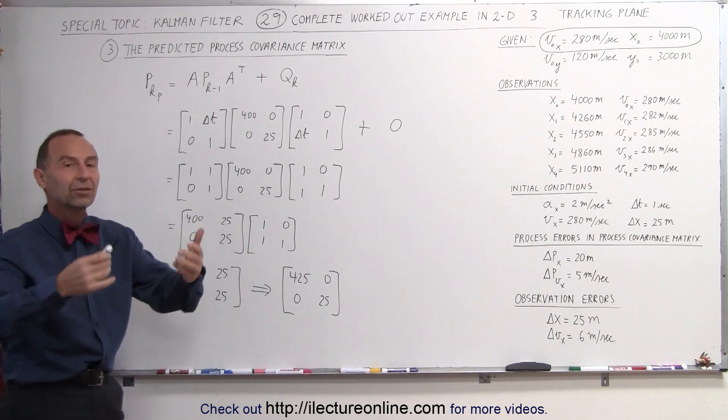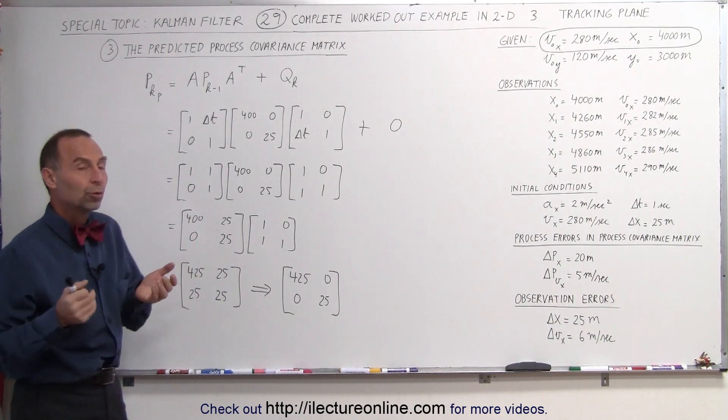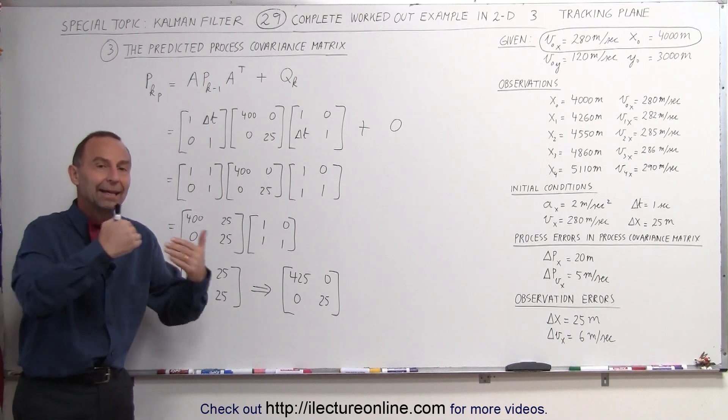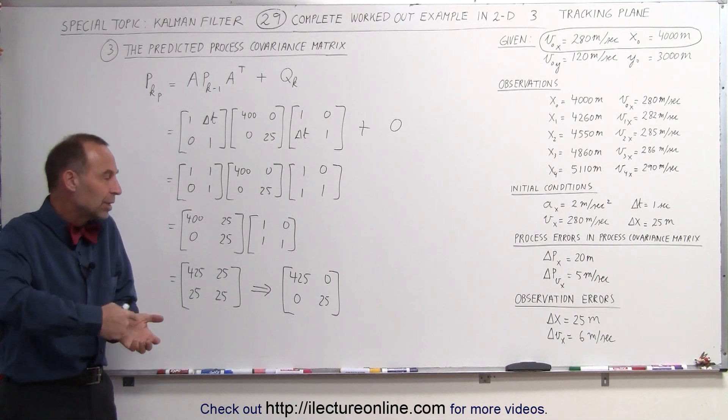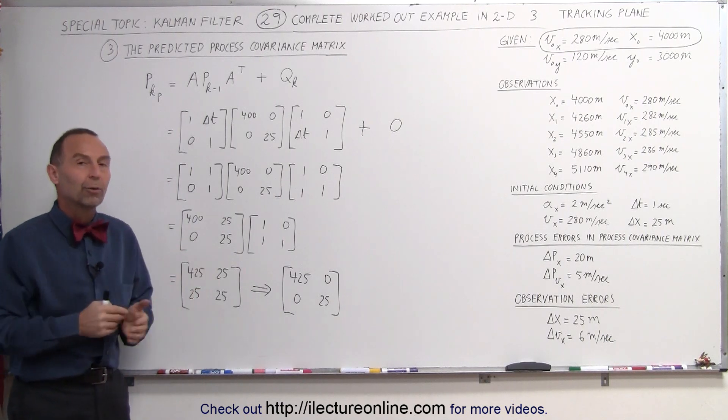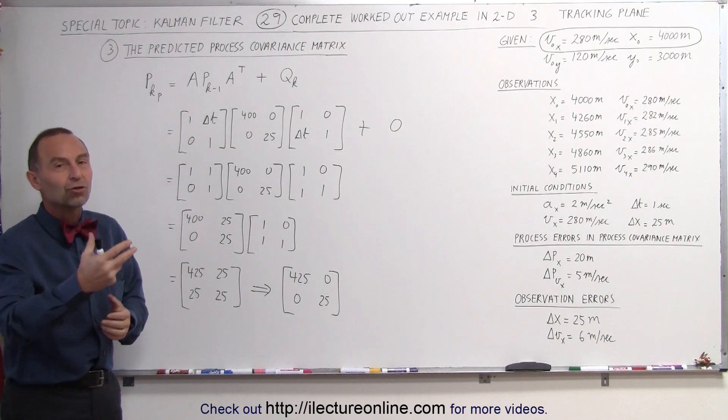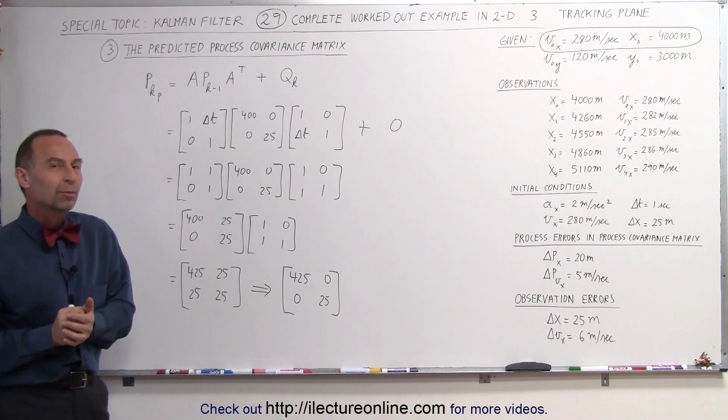This is the adjusted or the predicted, what we call process covariance matrix, which we'll then use in the Kalman gain in this go-around. So each time we recalculate that predicted covariance matrix to adjust it for what we need it to be to get more accurate predictions to the future, where the state will be or where the position and the velocity will be of the thing that we're tracking.